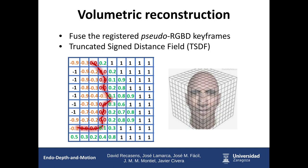Finally, we merge the keyframes with the EndoDepth pseudo-RGBD into a single continuous surface after being registered with the photometric tracking. To do this, we use a Truncated Signed Distance Field (TSDF) where the scene is divided into voxels, and for each voxel a cumulative distance function is stored that represents the distance to the closest surface, truncated at a certain depth value.